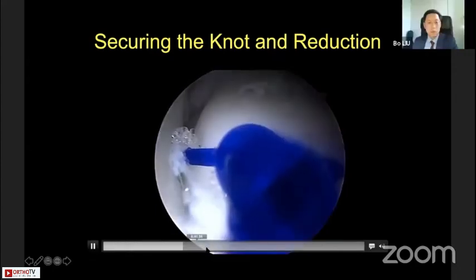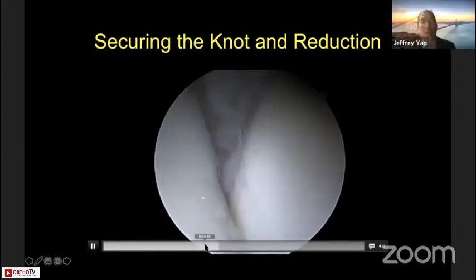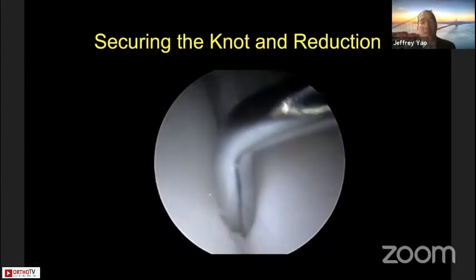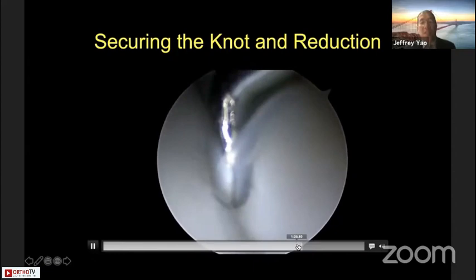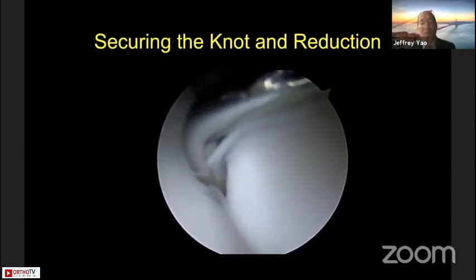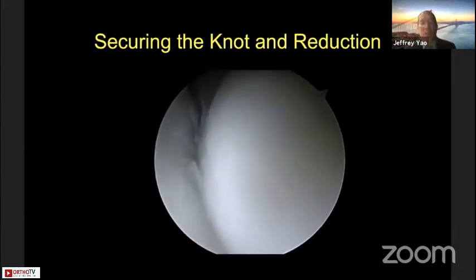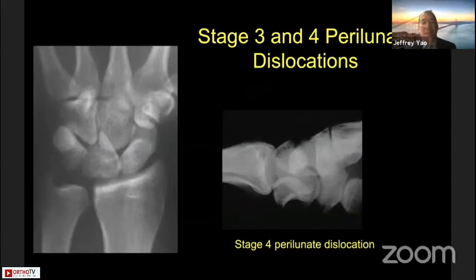Once the sutures are placed, you can see gapping at the scapholunate interval where I can insert the probe without tension on the ligament. But once tension is placed on the sutures, the interval closes up and you can see that it really stabilizes it. I was a little skeptical about the power of this technique, but after doing it several times I can attest to its stability and strength. This is a very useful arthroscopic technique.